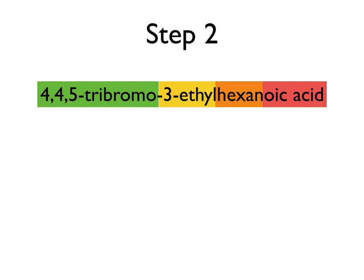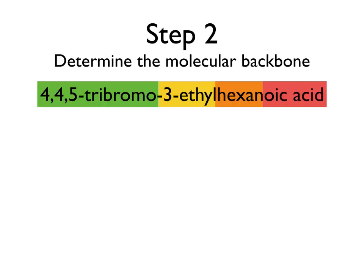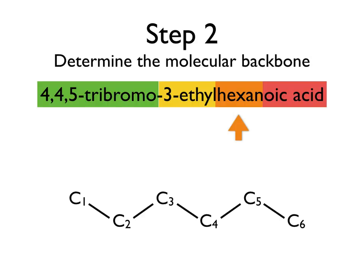Next up, let's determine what the backbone of this molecule is. We already identified the hexane as being important in there, so it looks like this organic molecule is going to have 6 carbons in its backbone. We're going to go ahead and put those out and number them for clarity, and then tie them all together with bonds.